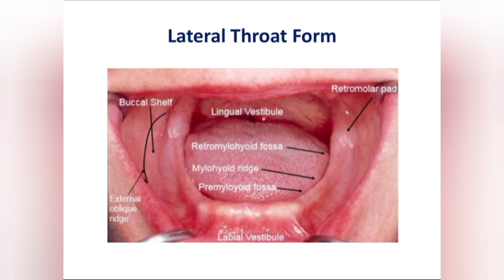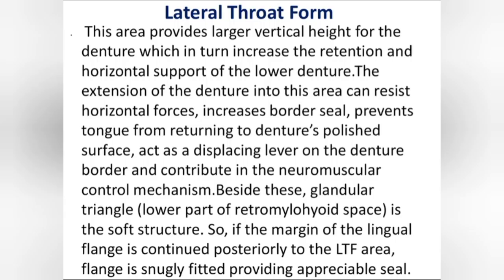This retromylohyoid fossa, or lateral throat form area, provides larger vertical height for the denture, which in turn increases the retention and horizontal support of the lower denture. The extension of the denture into this area can resist horizontal forces — that is support — increases border seal, prevents the tongue from returning to the denture's polished surface, acts as a displacing lever on the denture border, and contributes to the neuromuscular control mechanism.